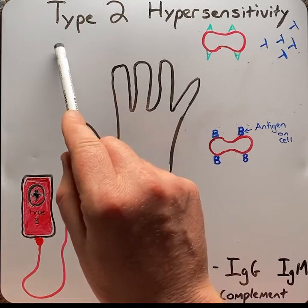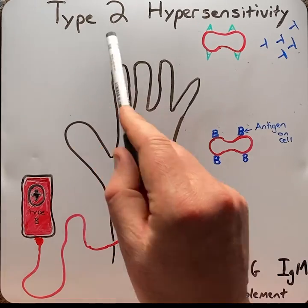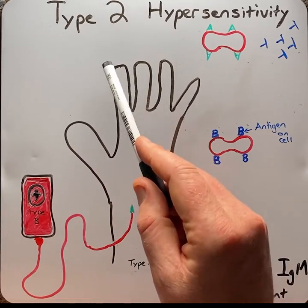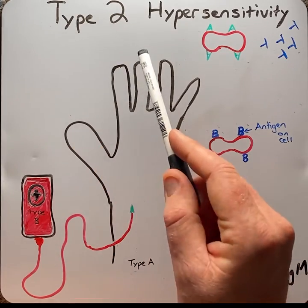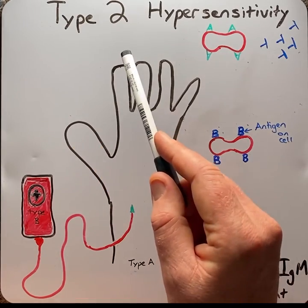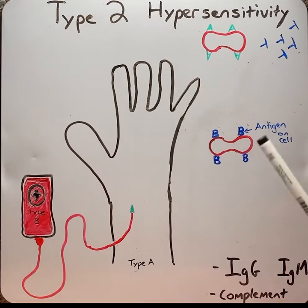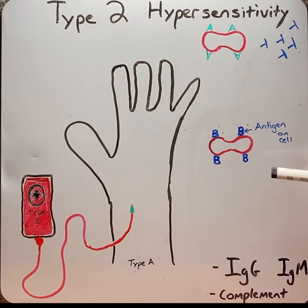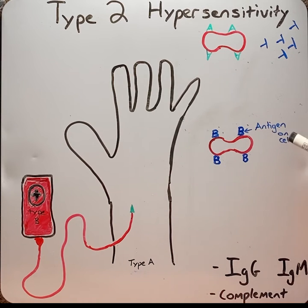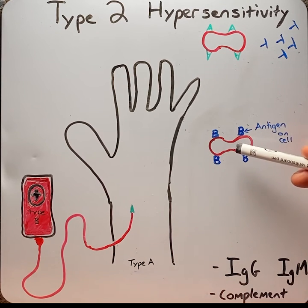In type 2 reactions, which are often called cytotoxic hypersensitivity, the immune reaction is directed against cells or tissue. These reactions are characterized by a fixed antigen on the cell.